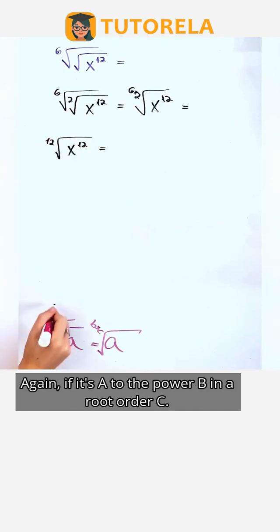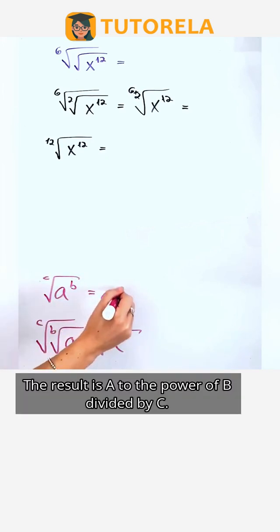Again, if it's a to the power b in a root order c, the result is a to the power of b divided by c.